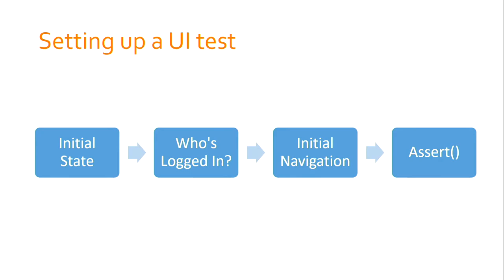Once you've decided a feature is worthy of a UI test, you need to write the actual test. That means dealing with four different things: what data has to exist in the system already, what user will perform the test, how does the test get to the page in question, and once the browser is on that target page, how do you write good clean maintainable test code? There are trade-offs and challenges at each level. I'm going to start with the test code itself and then work our way backwards.